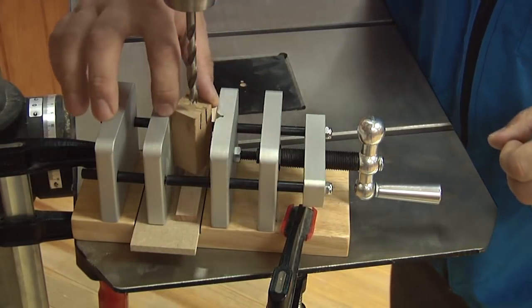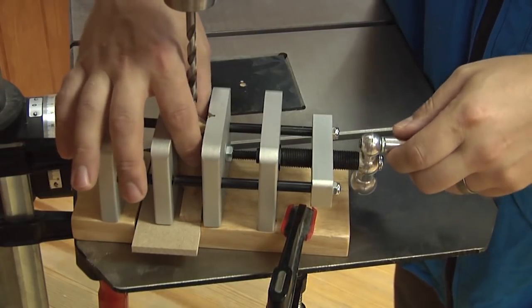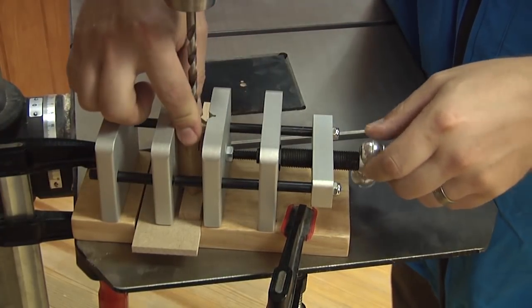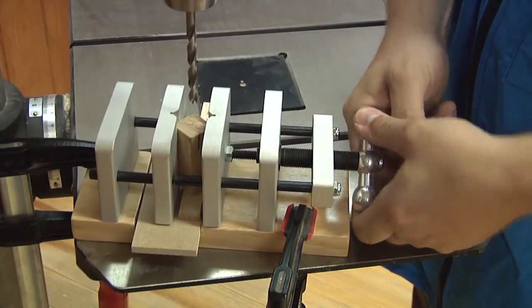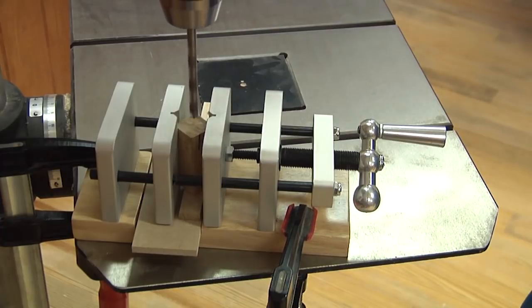To drill the pin blanks, I like to use this pin press centering vise lined up on the drill press, perfectly centered under the bit. Whatever size blank, just locked in place.